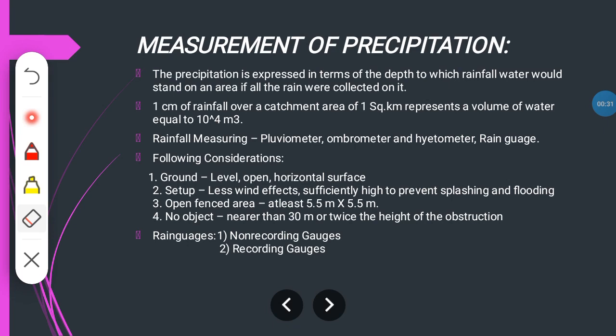Coming to the measurement, precipitation is expressed in terms of the depth to which rainfall water should stand on an area if all the rain were collected. So precipitation is measured in depth. Length is measured in centimeters, weight is measured in kilograms, and precipitation is measured in depth — meaning centimeters, meters, millimeters, like that.